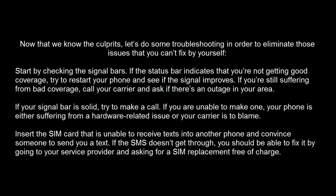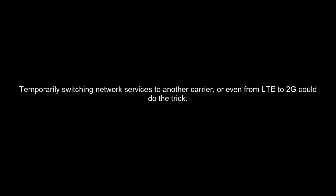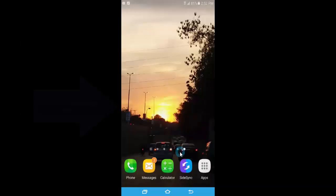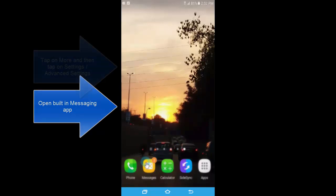Since we know these are the basic problems, we can perform all those steps. First, check the signal bar and check the network coverage to see if the signals are good and you are getting the network. You can also replace your SIM, which is most probably free in many countries. You can also switch the network completely from LTE to 2G or Edge, whatever is available, and see if you can get the message.